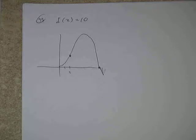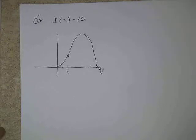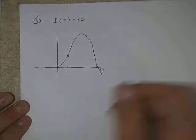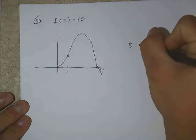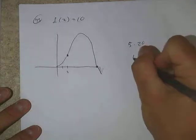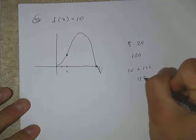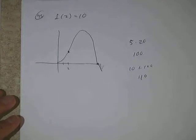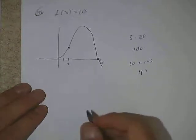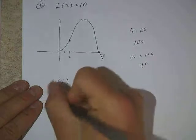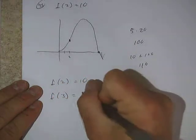Counting the boxes from 2 to 6, we have roughly 17 to 19 full and partial boxes. Each box is 5 by 1, so each box is worth 5 square units. If we say approximately 20 boxes, that's 100 added to our starting value of 10, giving us about 110. The answer is E, which is approximately correct.